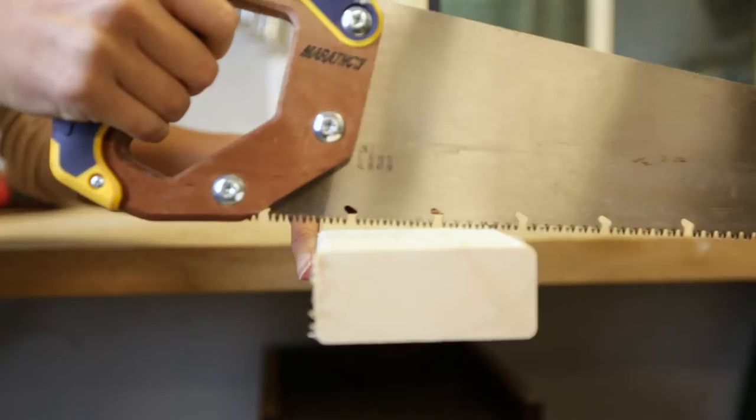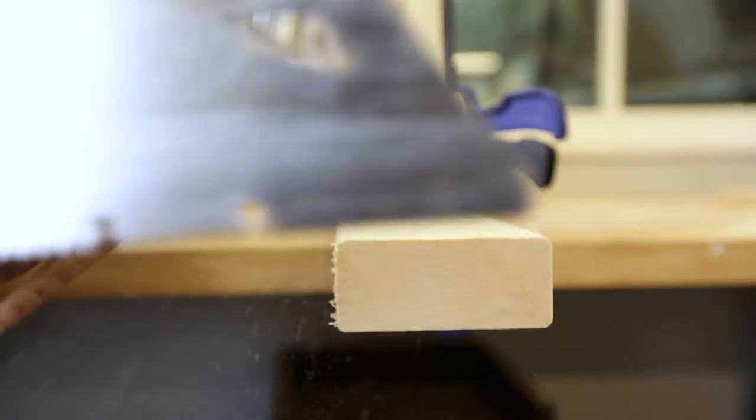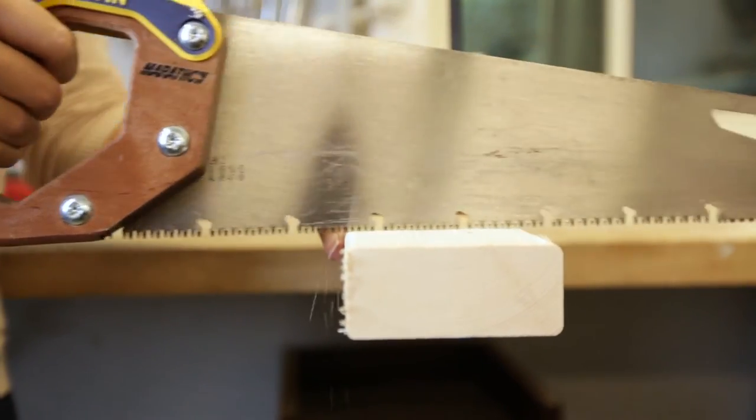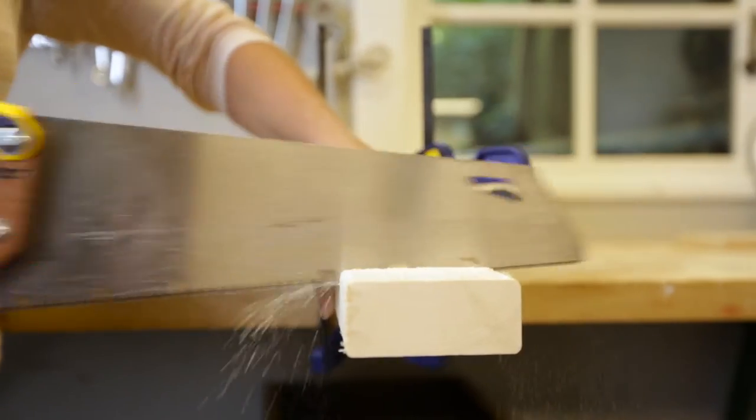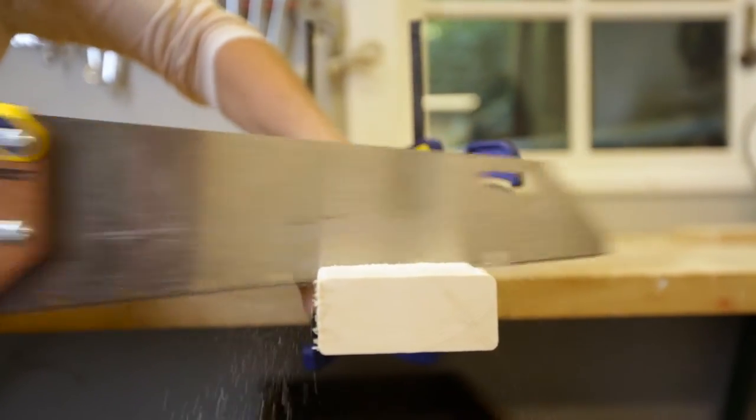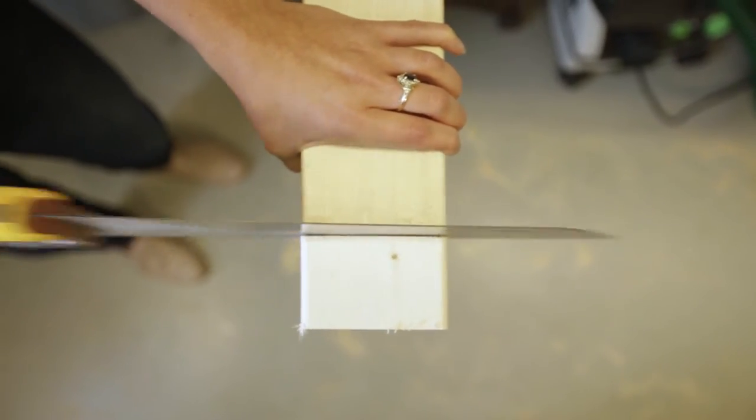Move the blade along the wood in the opposite direction of its strongest cut several times to easily establish a groove. Work the saw back and forth firmly but without adding pressure, allowing the saw to do the work.